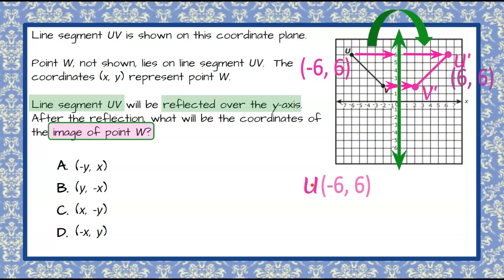Okay, so now if we bring that down to look at it, we have U was (-6, 6), and the image was U prime (6, 6).